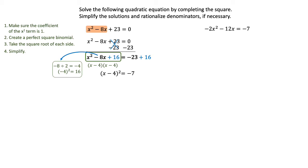Notice that every time you do this, whatever half of that middle term is — half of that negative 8 is negative 4 — that's the number that we used in our perfect square binomial. This will happen each time that you complete the square. Just make a note and we're going to continue the problem.